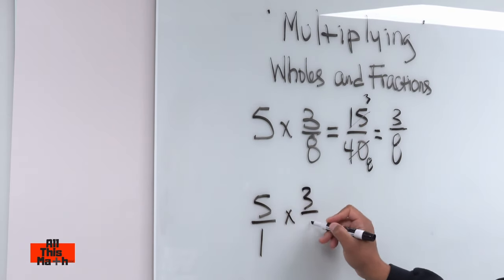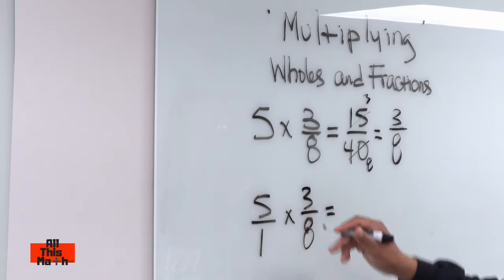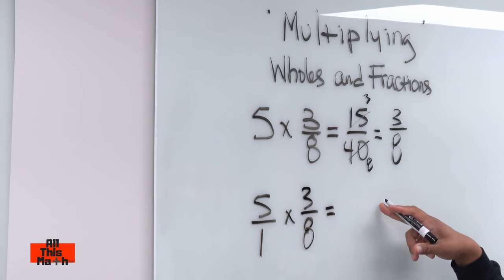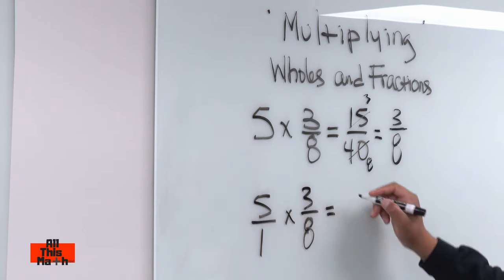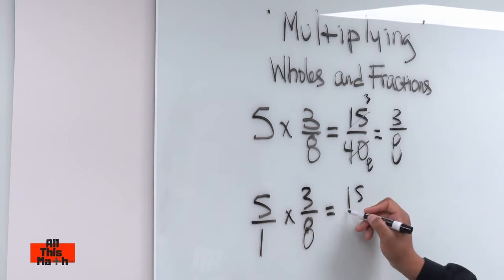So then you would do five over one times three eighths and then you can multiply straight across horizontally, numerator times numerator, denominator times denominator. Five times three is 15 and one times eight is eight.